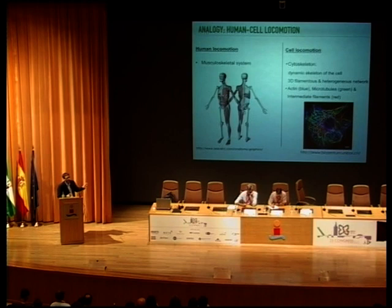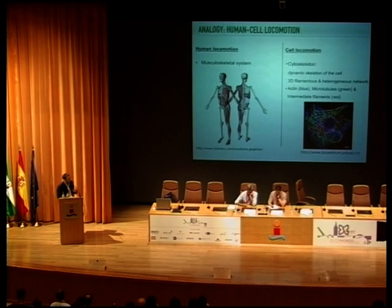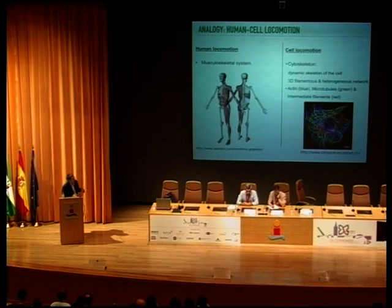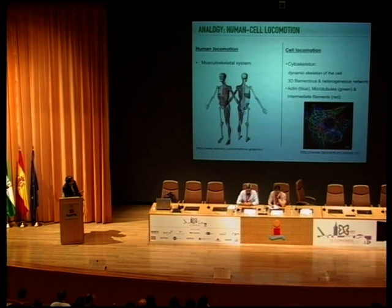To understand how cells move, let me make a simple analogy comparing how we move versus how a cell moves. When we move, we use our musculoskeletal system. For cells, they have the cytoskeleton — a dynamic part of the skeleton mainly composed of three kinds of filaments: actin in blue, microtubules in green, and intermediate filaments in red. The cytoskeleton is the skeleton of the cell.